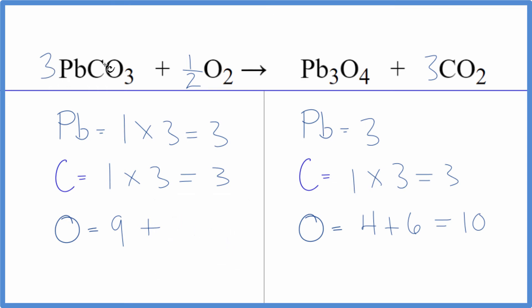Now we have 3 times 3. That's our 9. 1 half times 2. That's just 1. And that equals 10. And this equation is balanced. And these are the correct coefficients.